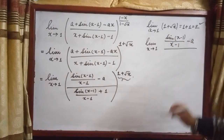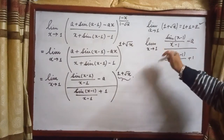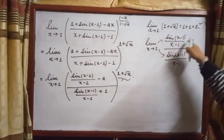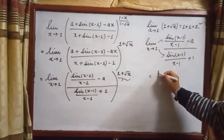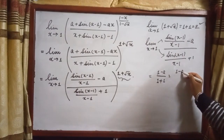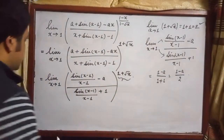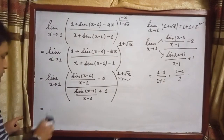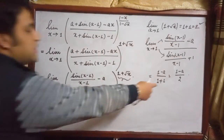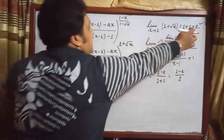After dividing by (x-1), the expression for f(x) becomes [sin(x-1)/(x-1) - a] / [sin(x-1)/(x-1) + 1]. The limit of the numerator as x tends to 1 is 1 - a, and the denominator gives 1 + 1 = 2. So the limit as x tends to 1 of f(x) is (1-a)/2. And the limit of g(x) as x tends to 1 equals 2.